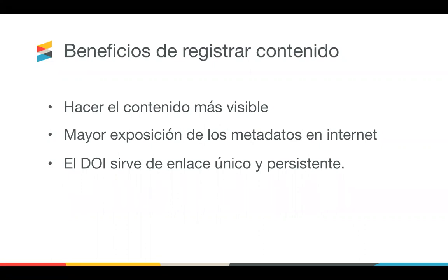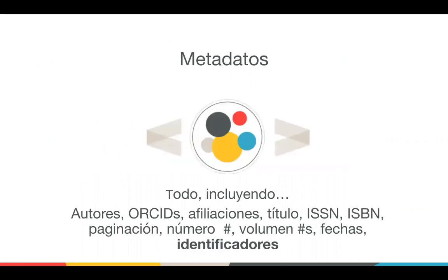También incluyen identificadores persistentes, los DOI, que permanecen con el contenido incluso si se mueve a una nueva ubicación en línea. Los miembros preparan el depósito reuniendo todos los metadatos asociados con el contenido, incluidos los DOI y las URLs donde se encuentra el contenido, y lo registran con Crossref. Cada tipo de contenido tiene metadatos básicos que deben incluirse, como autor, fechas, ISSN, títulos, DOI. Les pedimos que nos envíen tantos metadatos como sea posible.